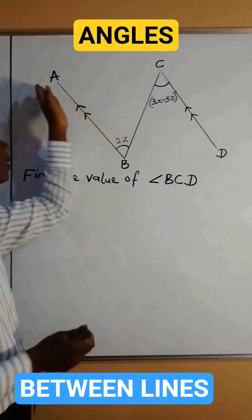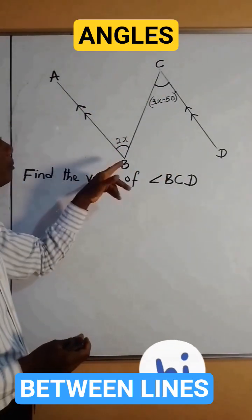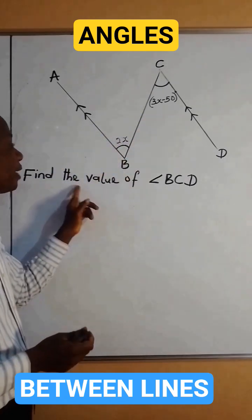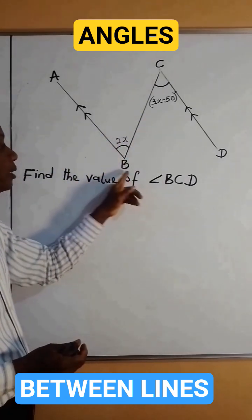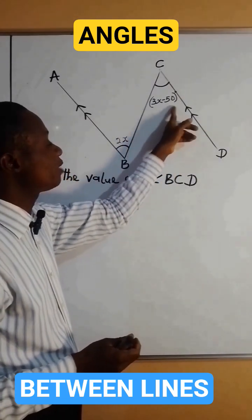Here we have two lines AB and CD parallel to each other, and we are told to find the value of angle BCD. So we have to find the value of this angle.